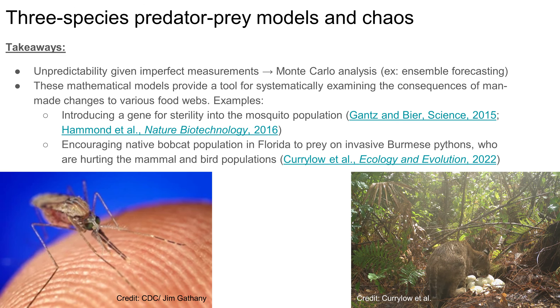Here's a second example. In the Florida Everglades, invasive Burmese pythons are threatening native mammal and bird populations. However, Currylowe et al. recently observed that the native bobcat population seems to be developing a taste for python, and they hope this could restore balance to the Everglades ecosystem.